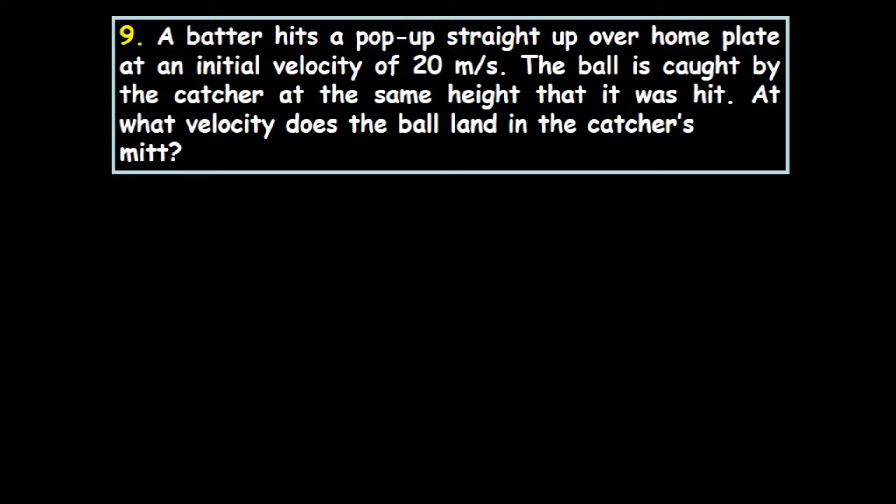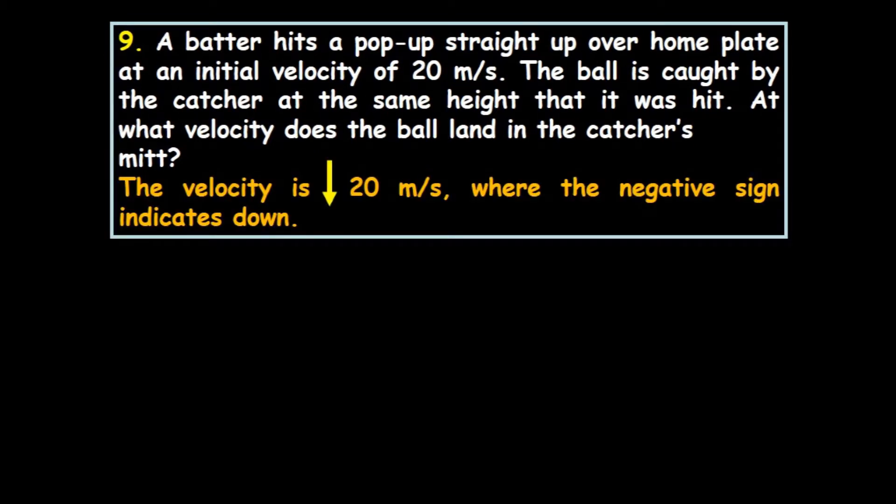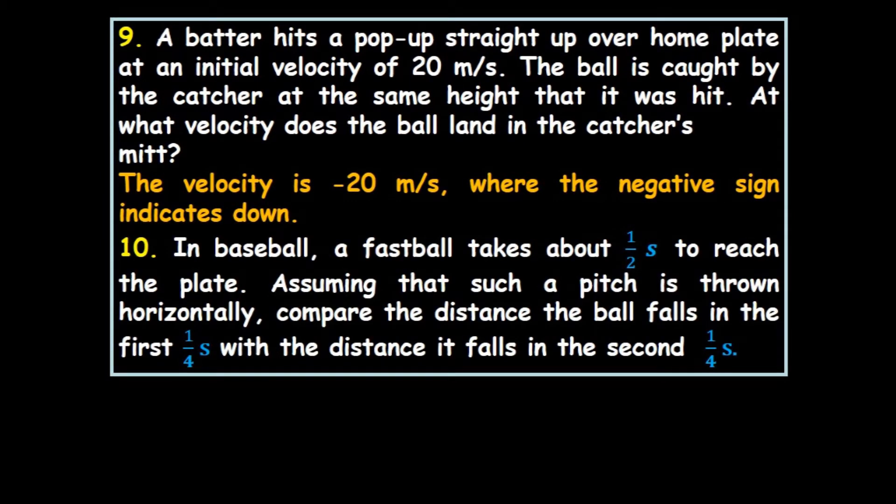In baseball, a fastball takes about one half second to reach the plate. Compare the distance the ball falls in the first quarter second with the distance it falls in the second quarter second. Because of the acceleration due to gravity, the baseball falls a greater distance during the second quarter second than the first quarter second.